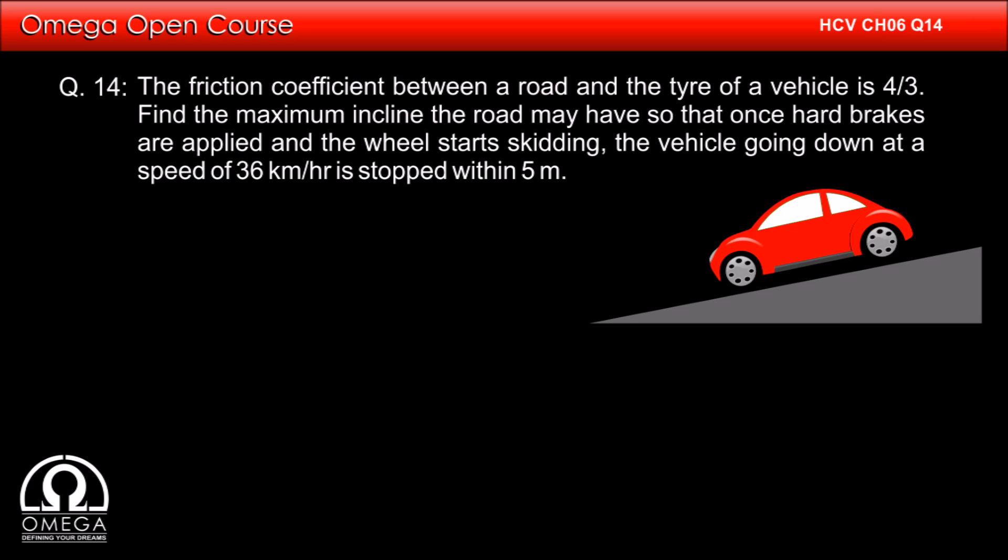The friction coefficient between road and the tire of a vehicle is 4 by 3. Find the maximum incline the road may have so that once hard brakes are applied and the wheel starts skidding, the vehicle going down at a speed of 36 kmph is stopped within 5m.